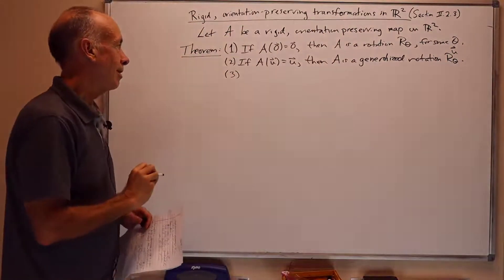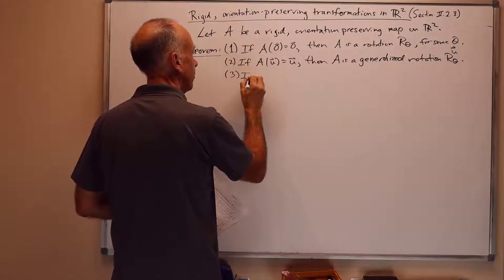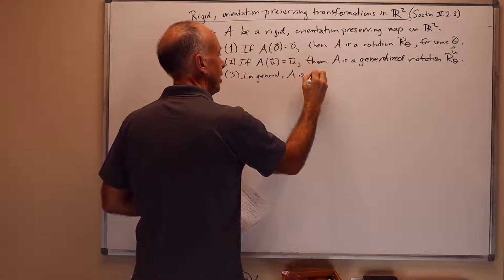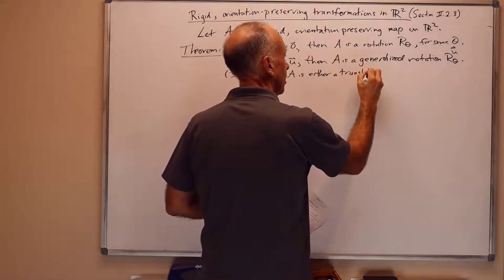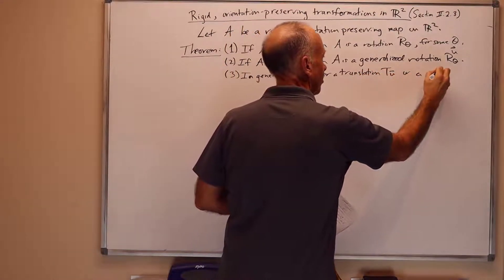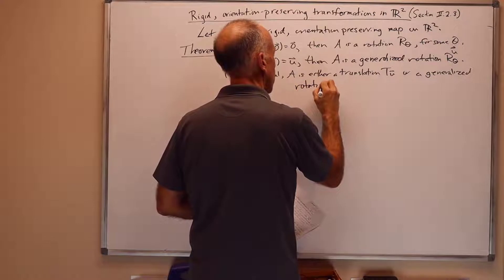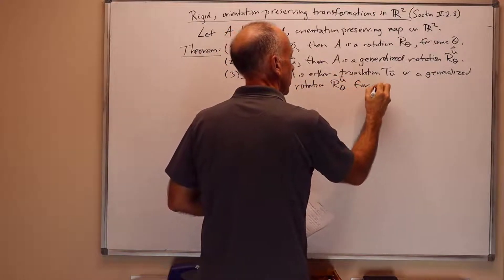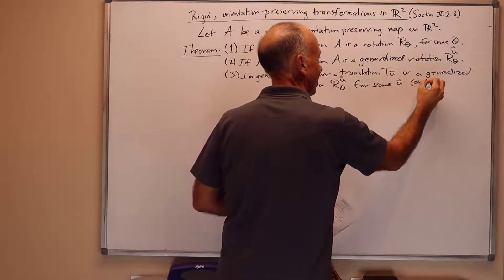Without assuming anything about fixed points, in general, A is either a translation T sub U, or a generalized rotation R U theta for some U and some theta in the second case.